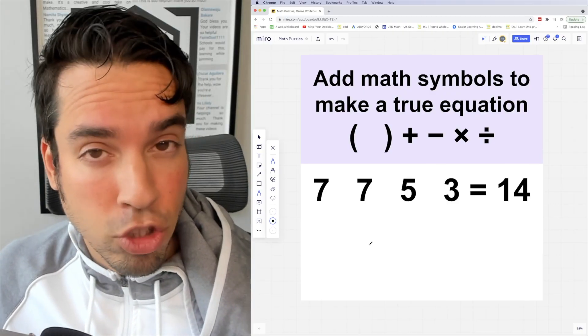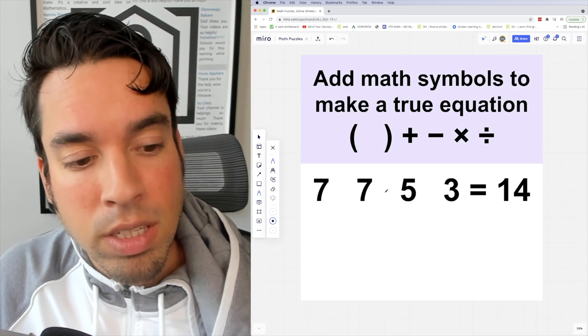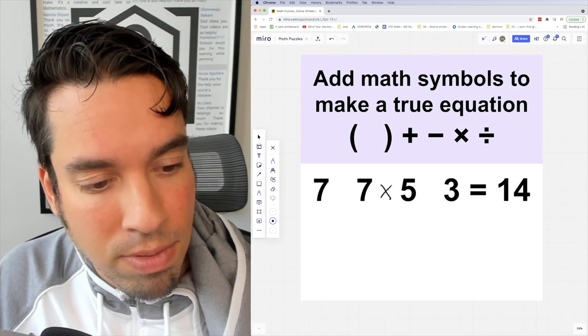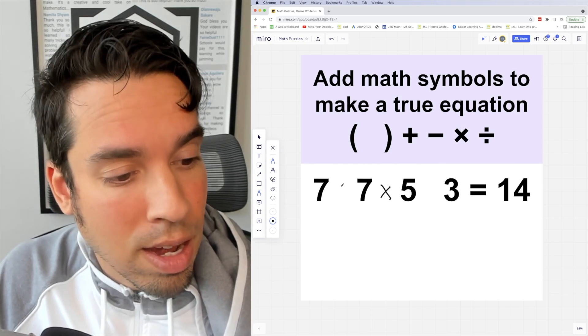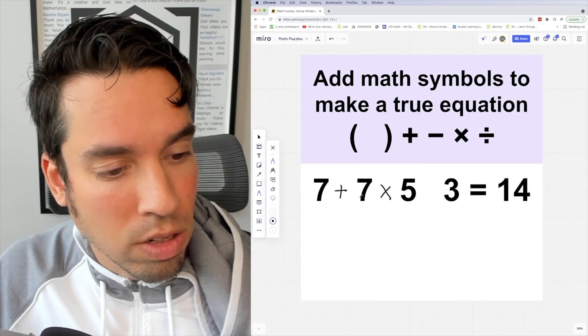While there might be multiple solutions and paths to success here, I'm going to show you the way that I came up with. First things first, I'm going to multiply the 7 and the 5, so that's 35. Then I'm going to add the 7, but because I want to make sure that the addition of the 7 happens before we do anything with the 3...